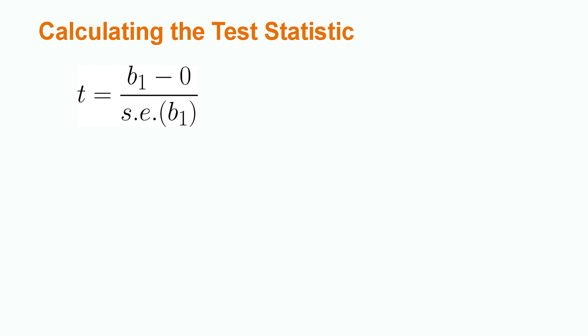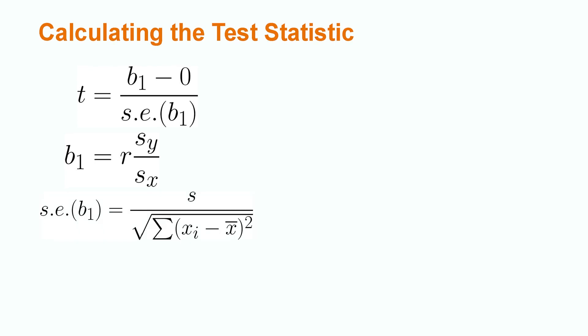When conducting a hypothesis test for the population slope, we use a t-statistic. The formula for t is our actual value of beta1 minus the hypothesized value of beta1, typically zero, divided by the standard error of beta1. We calculate the value of beta1 by multiplying the correlation coefficient by the standard deviation of y divided by the standard deviation of x. We calculate the standard error of beta1 by dividing the residual standard error by the square root of the sum of each x-value minus the mean squared. We compute the residual error by taking the square root of SSE divided by the sample size n minus 2. Please note that we do not have time to discuss how to compute SSE, R, or the standard deviation of x and y in this lesson, so these values will be given to us.